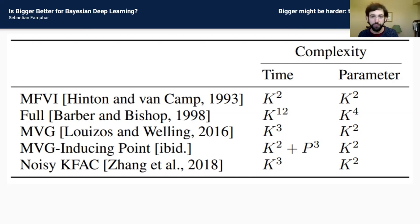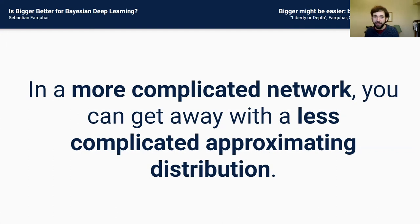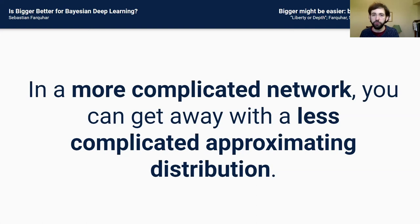In particular, the more complicated your network is, the less complicated your approximating distribution needs to be, if what we care about is learning an approximating predictive distribution. The claim is that what we really care about is making predictions given our data — we don't care about learning parameter distributions for their own sake, only instrumentally as a way of getting predictive distributions. When we adopt that mindset, we can trade off between network complexity and approximating distribution complexity, potentially getting rid of structured correlations altogether and just using mean field distributions.